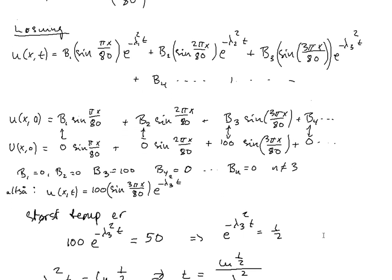So in this case we also get a very simple expression for the general solution. It's equal to u(x,t) = 100 sin 3 pi x divided by 80 multiplied with the exponential function of minus lambda 3 square t.